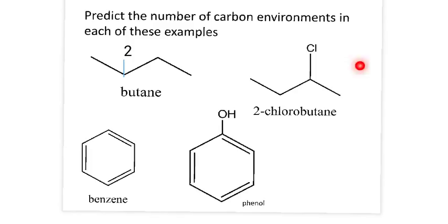For 2-chlorobutane, however, these two end carbons are no longer equivalent, because this one is next to a carbon with a Cl on, whereas this one is next to a carbon that hasn't got a Cl on. So now you've got one, two, three, four different environments, because these inner carbons are also different—this one has a Cl on, and this one doesn't.